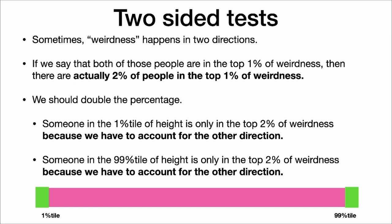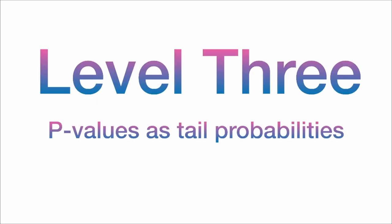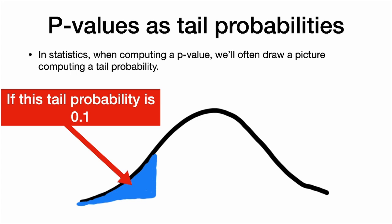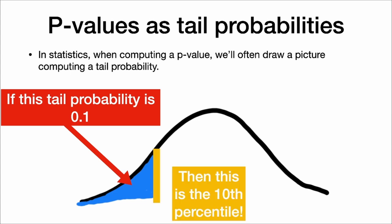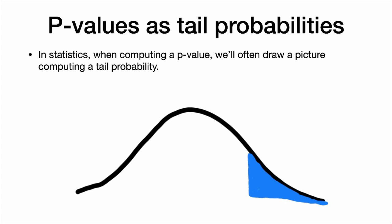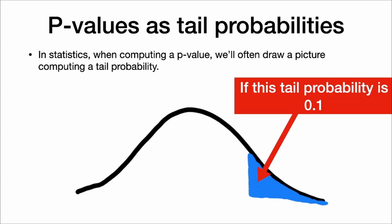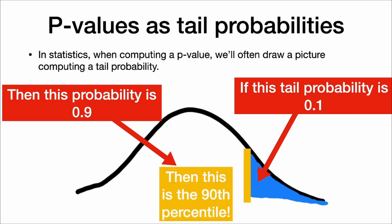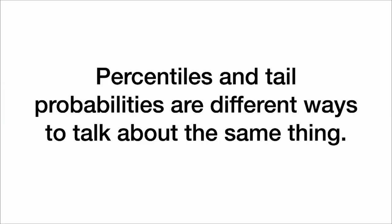Level 3: p-values as tail probabilities. In statistics, when computing a p-value, we often draw a picture computing a tail probability. If this tail probability is .1, then that value is the 10th percentile. Similarly, if we draw the area to the right and the tail probability is .1, then the probability to the left is .9, meaning the value is the 90th percentile. Percentiles and tail probabilities are just different ways to talk about the same thing — if we know a tail probability, we can convert it to a percentile and vice versa.